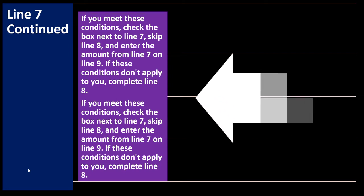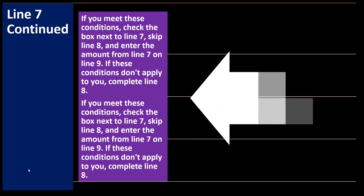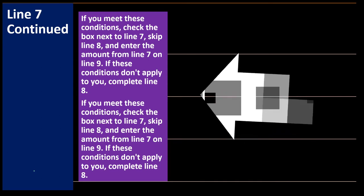Line 7 continued: if you meet these conditions, check the box next to line 7, skip line 8, and enter the amount from line 7 on line 9. If these conditions don't apply to you, complete line 8.